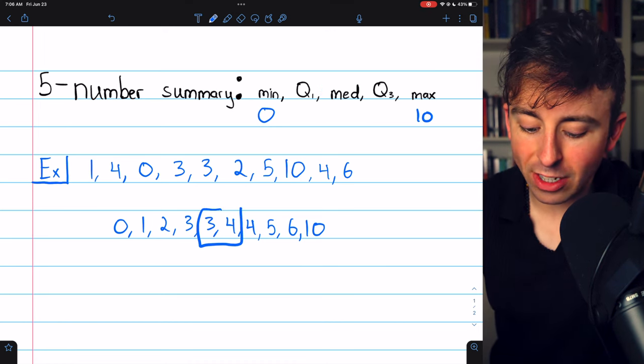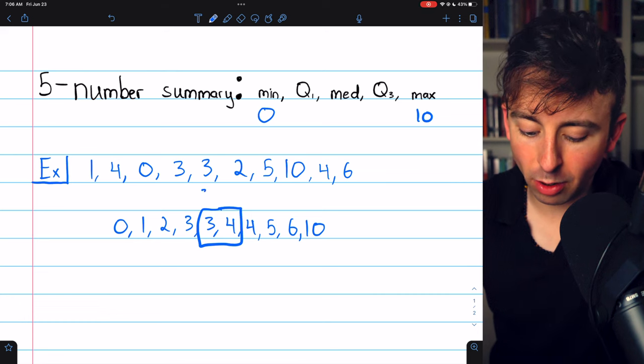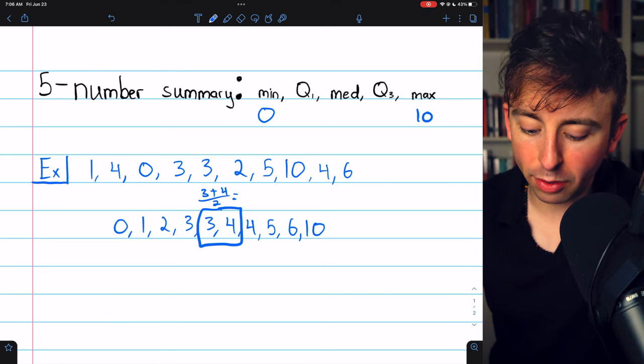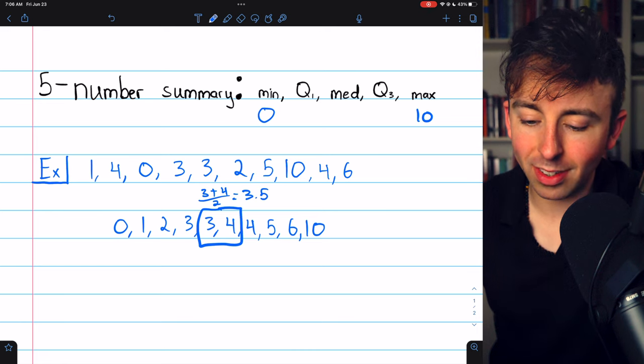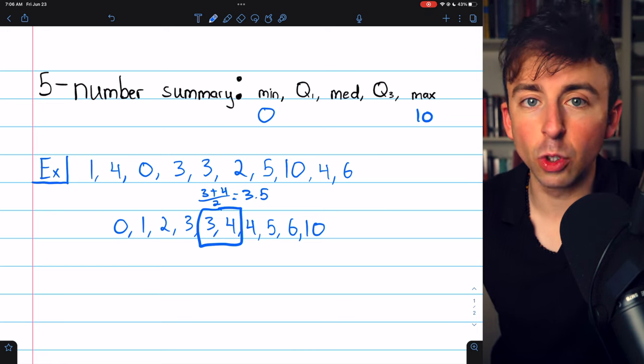It's the average of the two numbers in the middle. So that's just 3 plus 4 divided by 2. You can also just think of this as the number that's halfway between the two numbers in the middle.